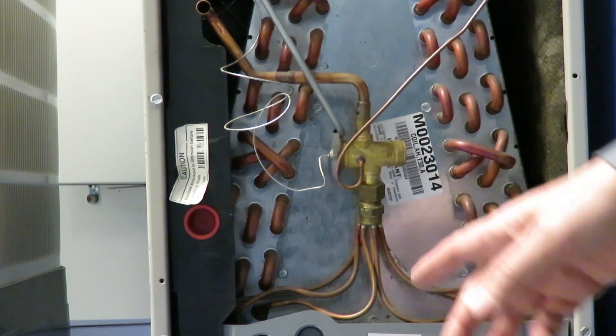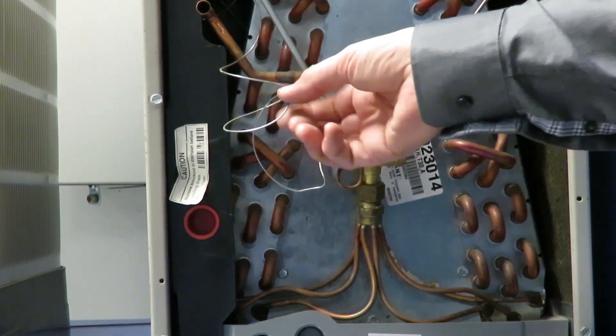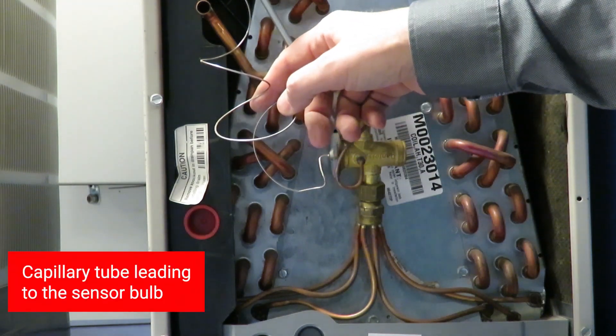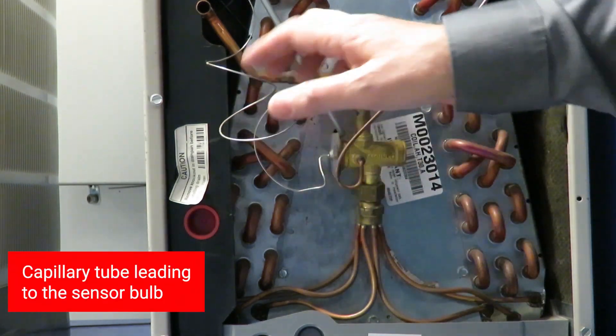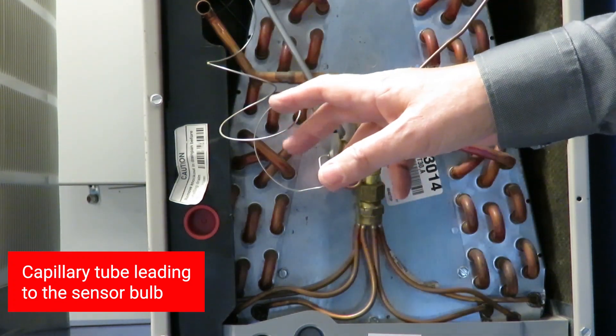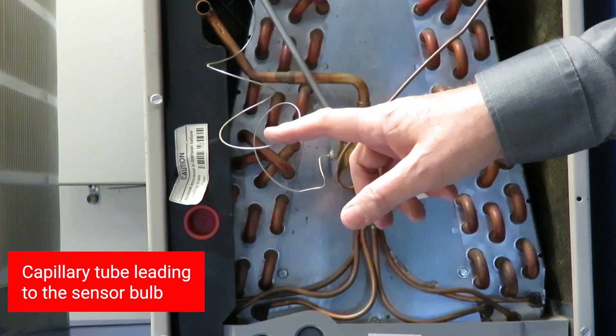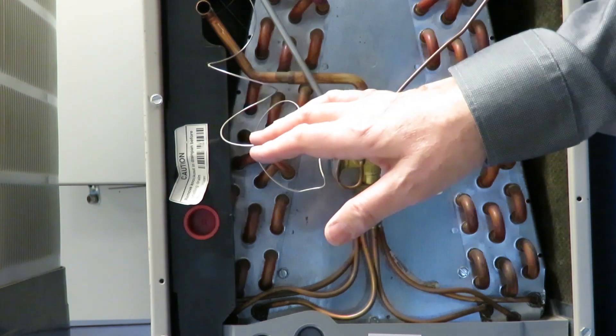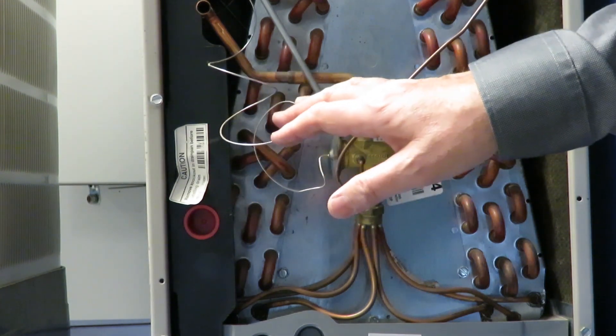Then as the last part we have this capillary tube, stainless steel, and that goes up here to the bulb. Again in the second close-up we will show you where the bulb is placed. This capillary tube is very sturdy.